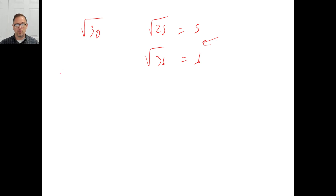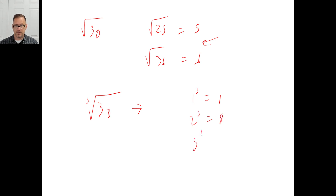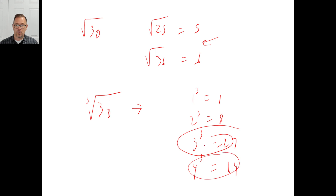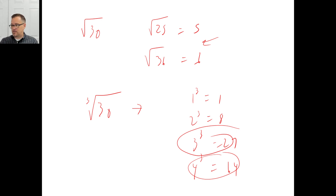The cube root of 30 — what numbers times themselves 3 times give you 30? 1³=1, 2³=8, 3³=27 — getting close. 4³=64. So it's between 3 and 4, much closer to 3 because 27 is closer to 30 than 64 is. Siri confirmed: the cube root of 30 is approximately 3.1072.